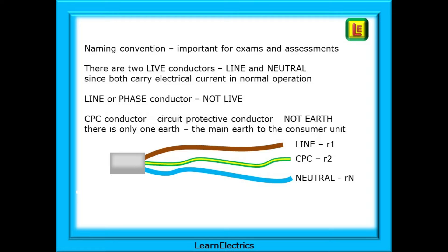We also have the CPC conductor — the circuit protective conductor. The conductor in the cable should not be called the earth, as there is only one earth in the property: the main earth to the consumer unit. The line can also be called little r1, the CPC is little r2, and the neutral can be called little rn.